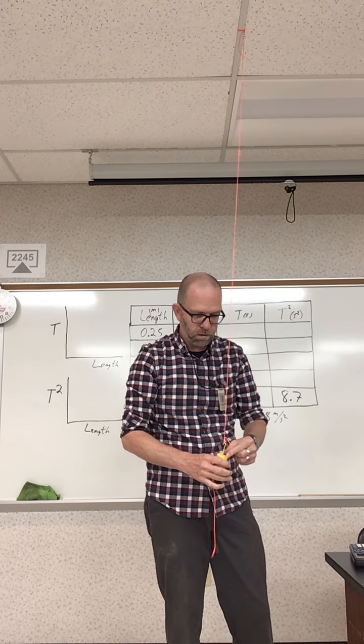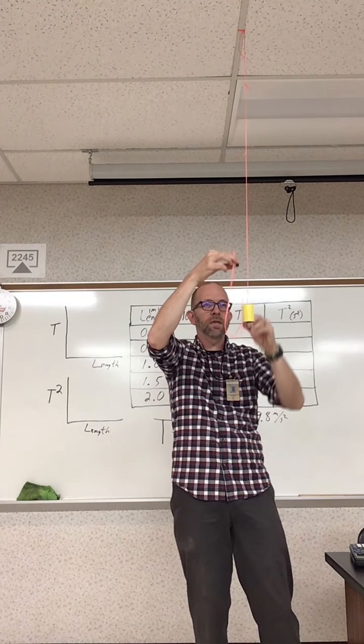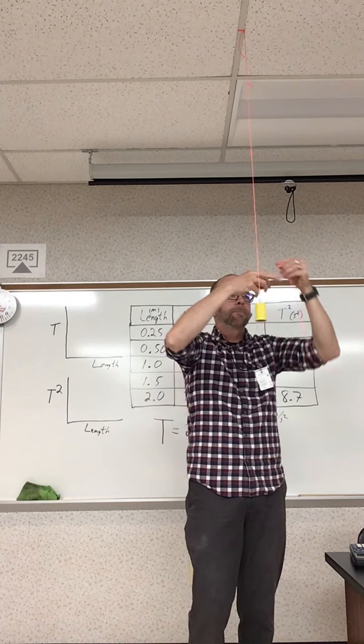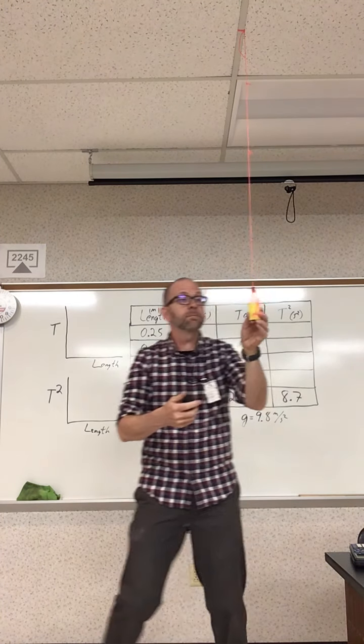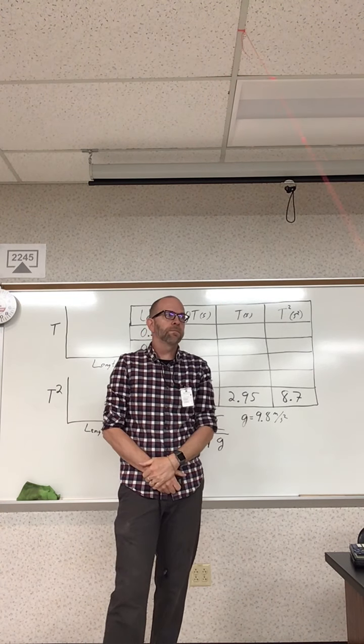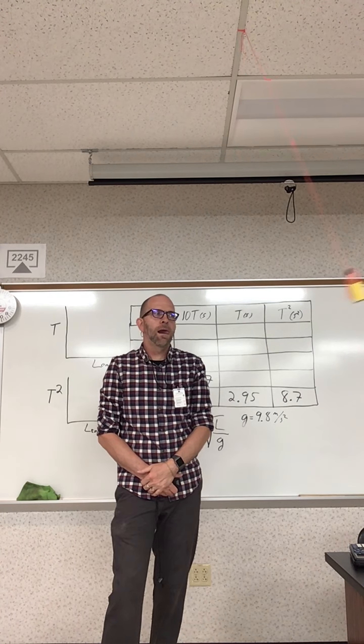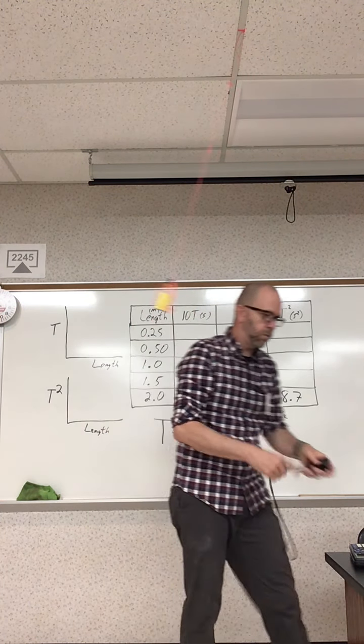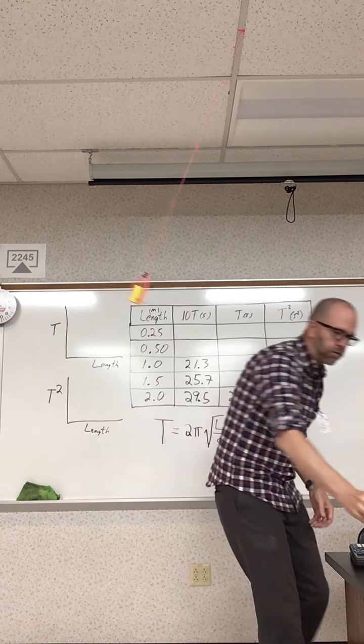And I will go ahead and move the pendulum up to a one meter length, one meter from the ceiling. Let me get the string out of the way. You notice this should take even less time. Let me give it a swing. One, two, three, four, five, six, seven, eight, nine, ten. So that's 21.3. You notice it takes less and less time as you shorten the pendulum.